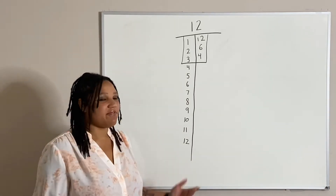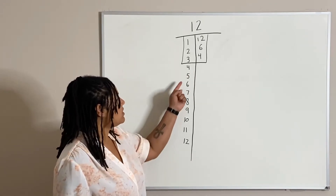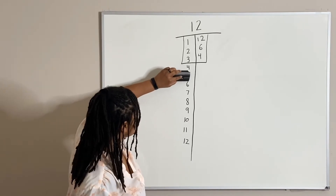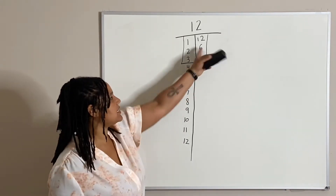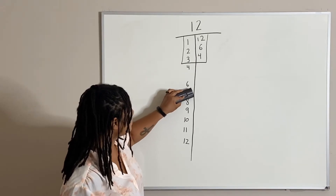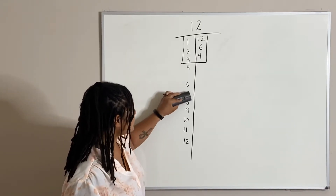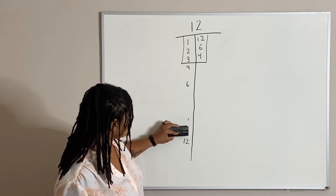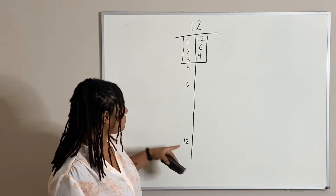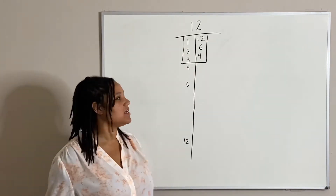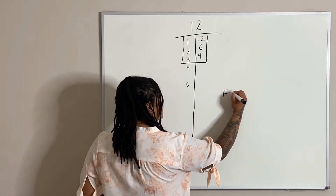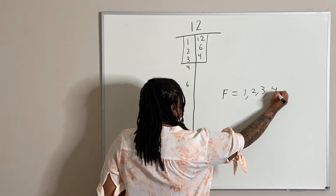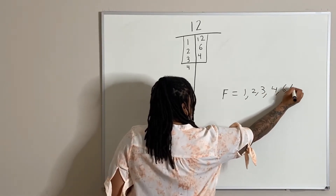Five doesn't work, so I'm just going to go ahead and erase. What about the number six? Yes, six and two works. What about the number seven? No. What about eight? No, it doesn't work. Nine doesn't work. Ten doesn't work. Eleven doesn't work. But yes, twelve works because we have a repeat. So our factors are one, two, three, four, six, and 12.